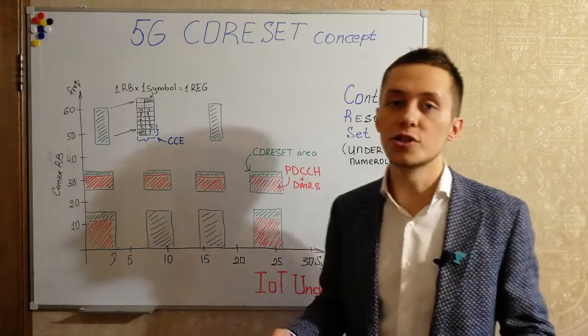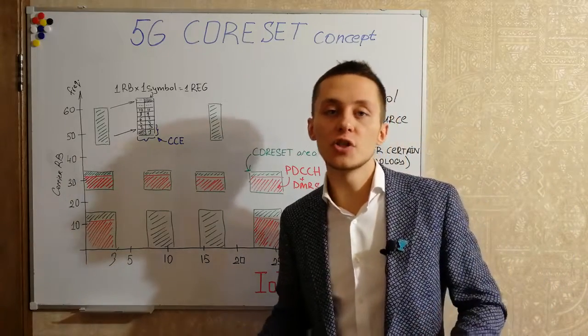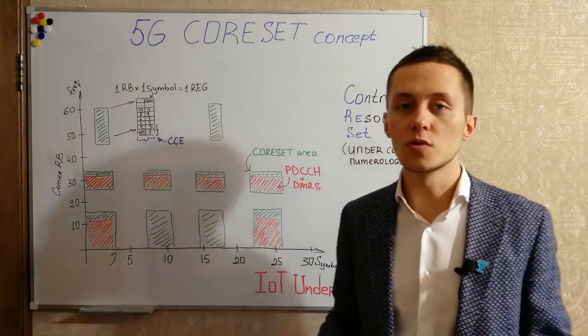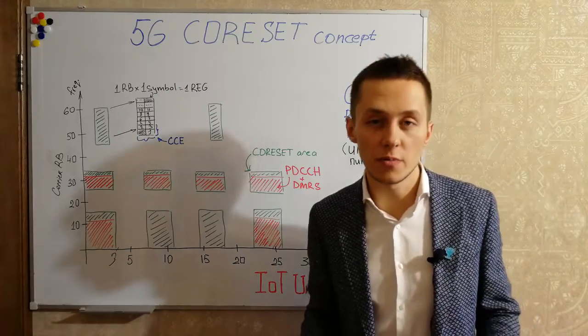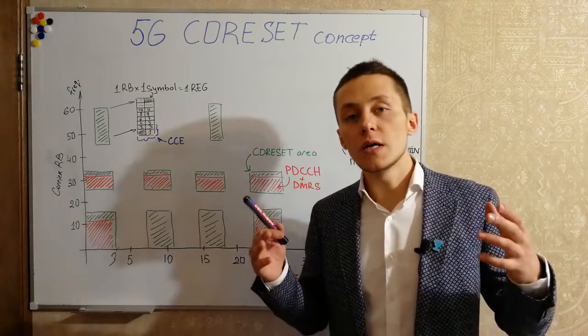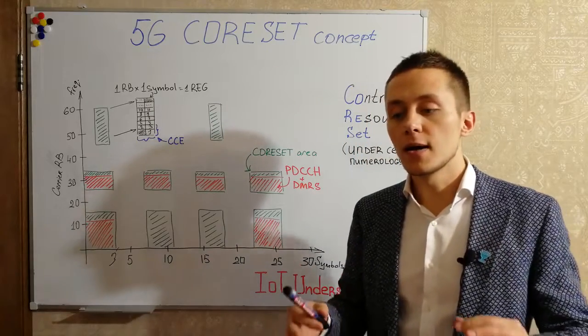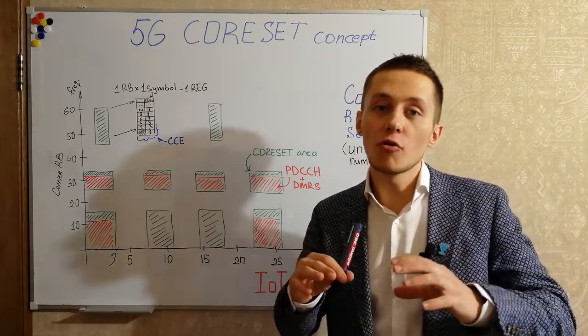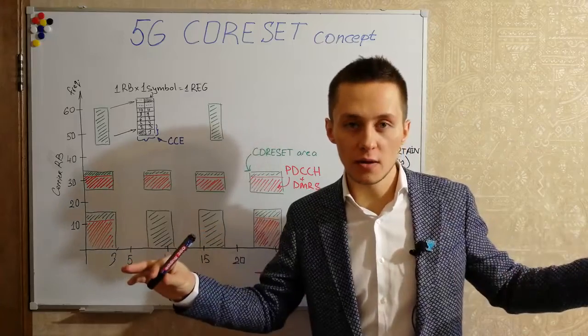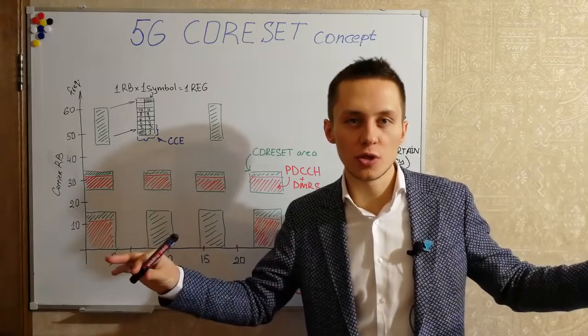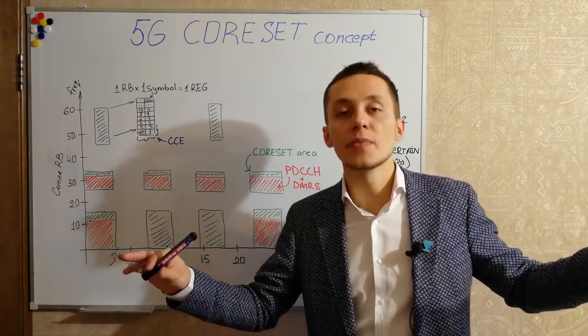There is a huge difference between 5G and 4G when it comes to allocating downlink control information because in 4G PDCCH is allocated across the whole channel, across the whole bandwidth of LTE.